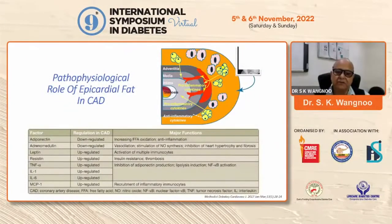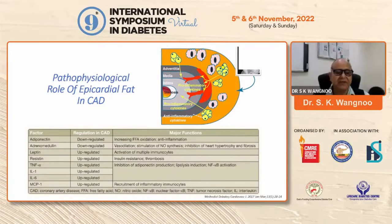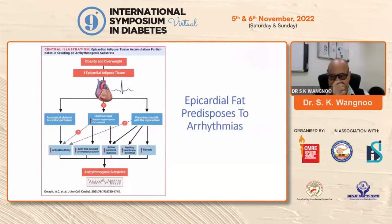Coming to the importance of epicardial fat in coronary artery disease: adiponectin is down-regulated, adrenomedullin is down-regulated — both of which are protective. When they become down-regulated, they cause an increase in free fatty acid oxidation. Leptin is up-regulated, resistin is up-regulated, TNF-alpha, IL-1, IL-6, MCP-1 — they are all up-regulated. This is the pathophysiological role of epicardial fat in coronary artery disease.